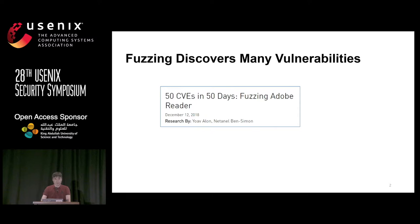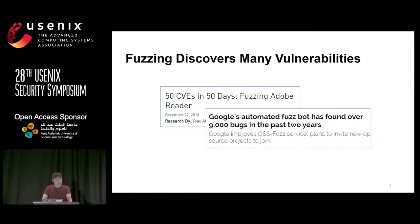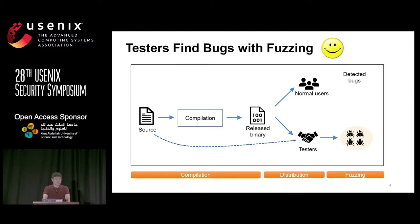Fuzzing is very good because fuzzing has discovered many vulnerabilities. For example, a group of researchers discovered 50 vulnerabilities in 50 days, which is very amazing. Nowadays, Google supports cluster fuzzing, and they discovered 9,000 bugs in two years. When developers develop a program and release the binary, testers launch fuzzing to discover bugs, while normal users enjoy the binary.